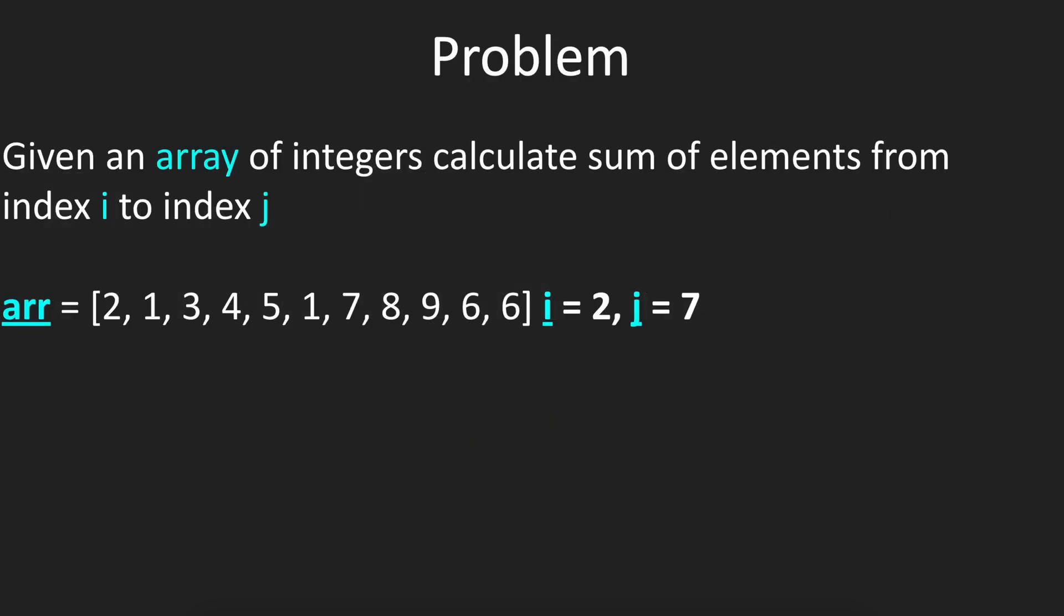So first let's start with a very simple example. Let's say that we are given an array of integers and we need to calculate the sum of the elements from index i to index j. In this case we have an array with the size of 11 and we need to calculate the sum from index i to index j where i equals 1 and j equals 7.